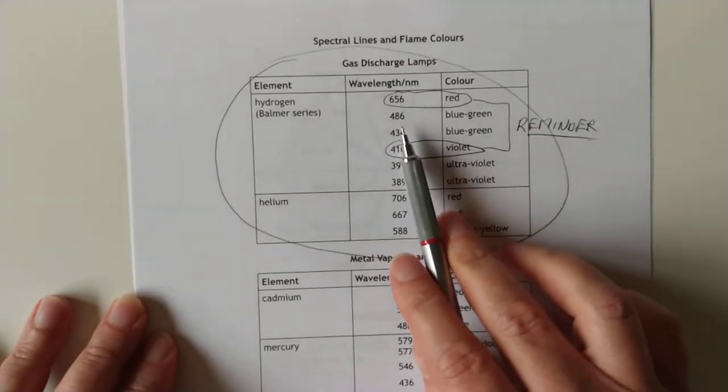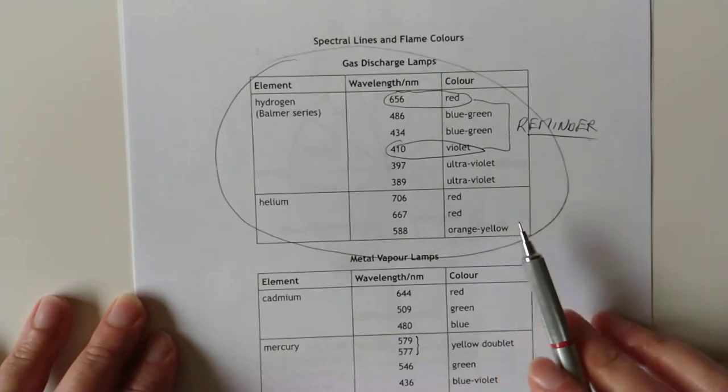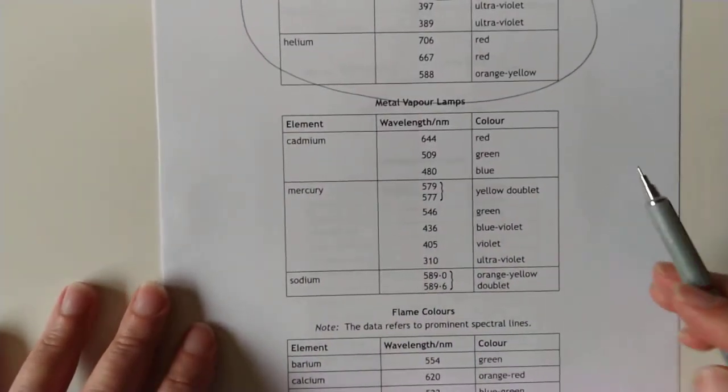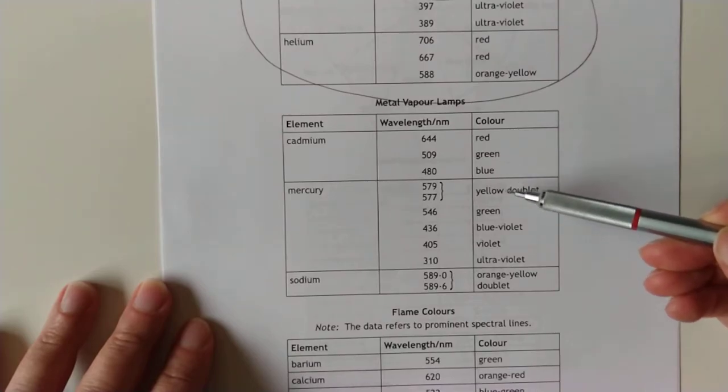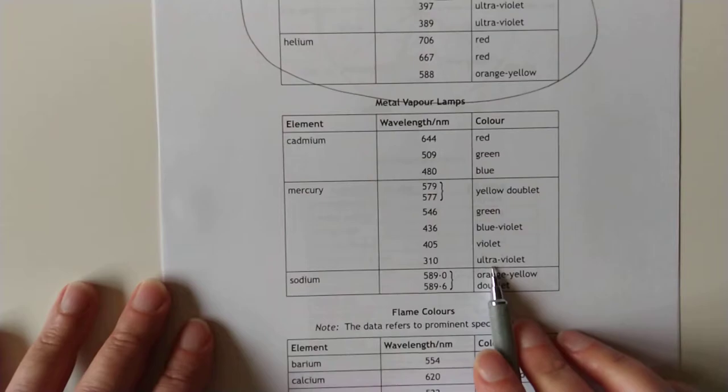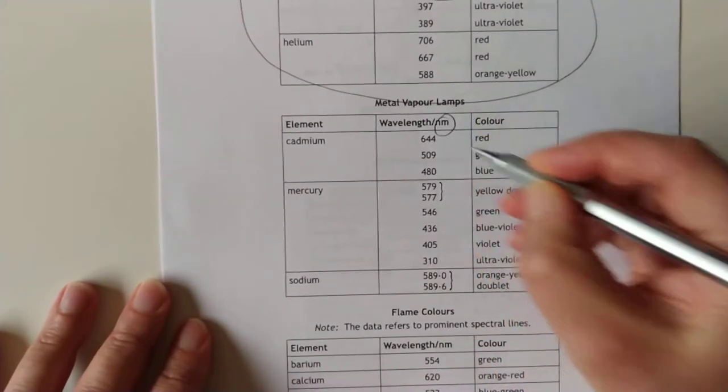And if you're looking for approximate wavelengths to go with any particular colours they ever quote in any of the questions, then you can find a sort of primer here if you need. From red all the way up to blue violet. And ultraviolet as well, in fact. Now I see that. 310 for ultraviolet. These are all in nanometres, of course.